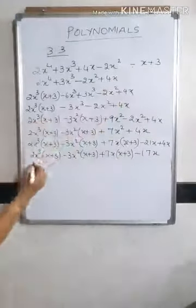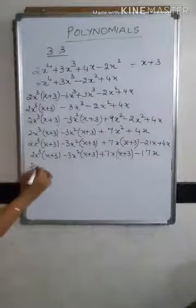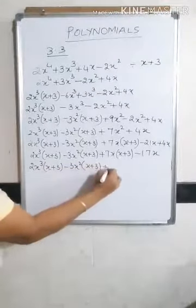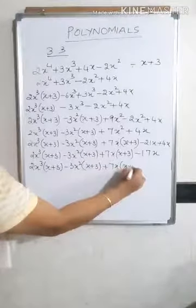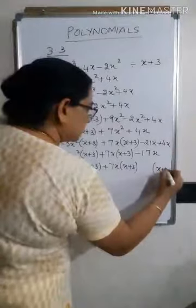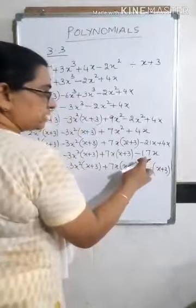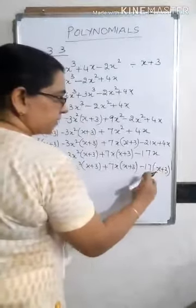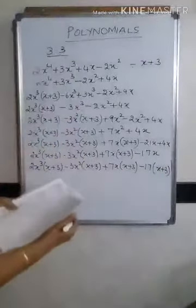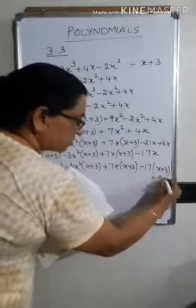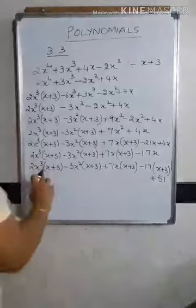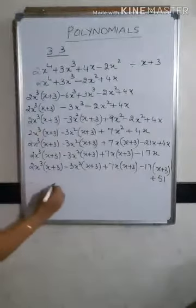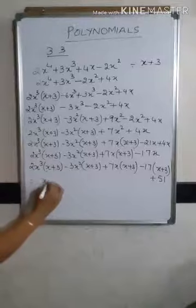Now express minus 17x in terms of x plus 3. Write x plus 3 and multiply by minus 17: minus 17 times x gives minus 17x, but minus 17 times 3 gives minus 51. Since we got minus 51, write plus 51 as the extra term. Now the common factor x plus 3 appears in all four expressions, so take x plus 3 out as common.